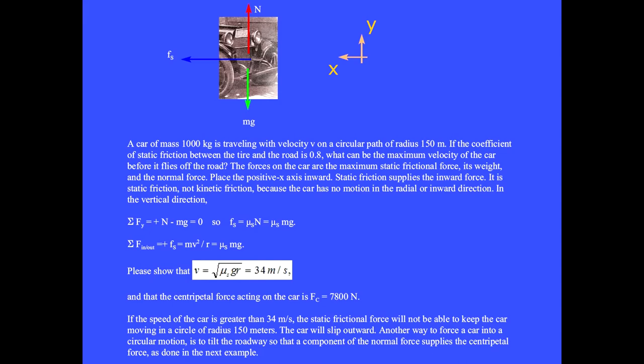Another way to force a car into circular motion is to tilt the roadway so that an inward component of the normal force supplies the centripetal force, as done in the next example.